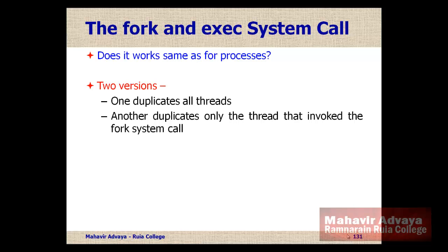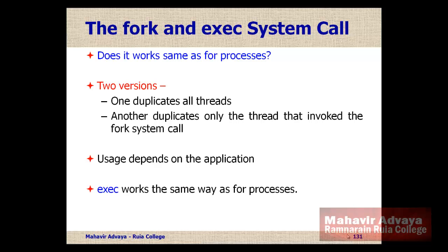If the execute system call is made immediately after forking, duplicating all threads is unnecessary. If execute is called right after the process is created, duplication of threads is not required — it will simply replace the process and start execution. The execute system call works the same way as it does for a regular process.